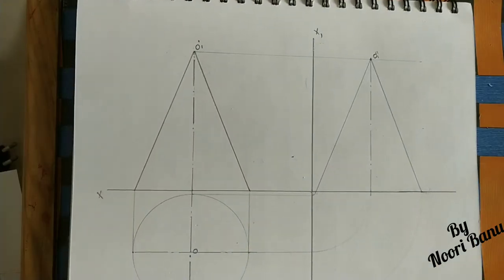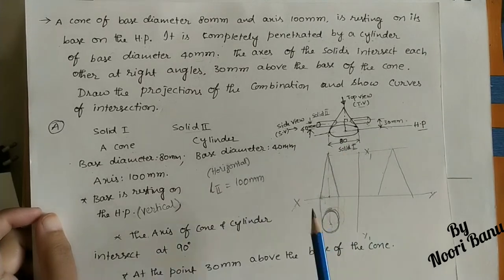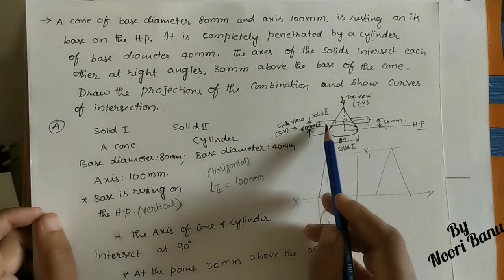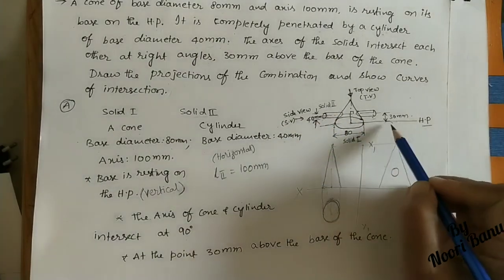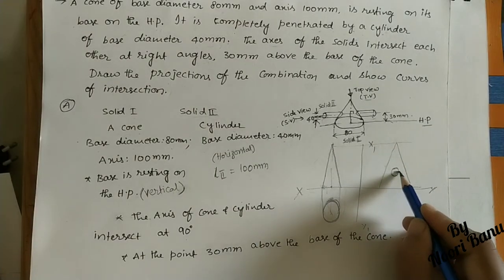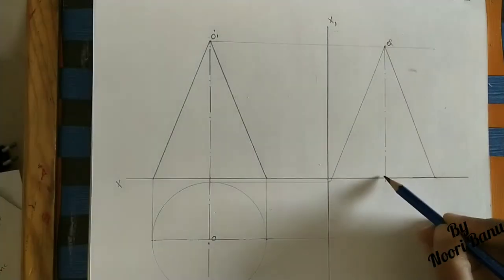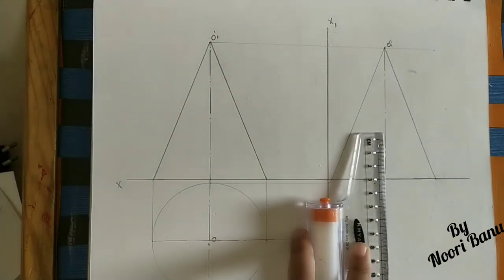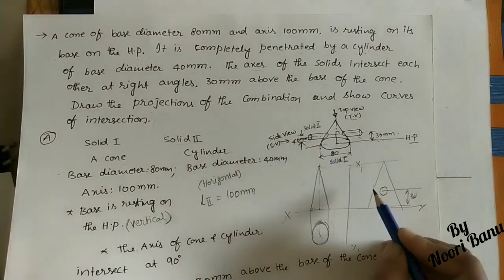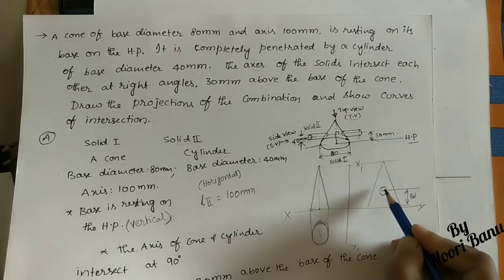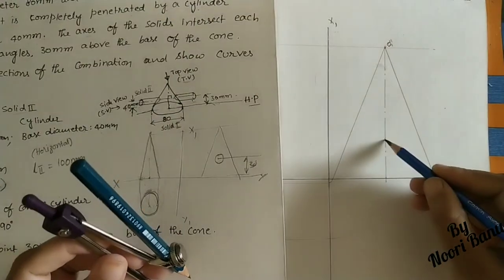We have completed three views of solid one. For the combined views with the intersection, first work on the side view. From the side, you can see the circle of the cylinder on the cone's surface. Mark the center of the cylinder 30 mm from the base on the axis. The cylinder diameter is 40 mm (radius 20 mm = 2 cm), so draw a circle of radius 2 cm at this center point.